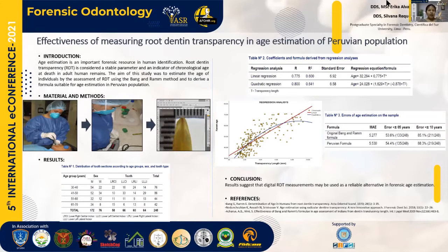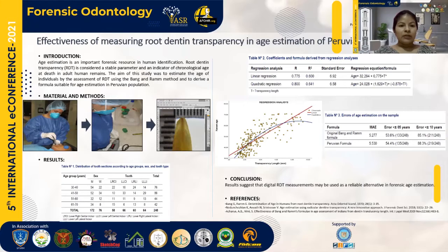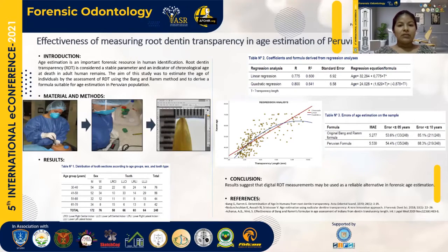As we know, age estimation is an important forensic resource in human identification. Teeth are not affected by the environment or pathological factors, and they remain well preserved in cases where the body of the deceased is decomposed or burned. Root dentin transparency is considered a stable parameter and an indicator of chronological age at death in adult human remains.